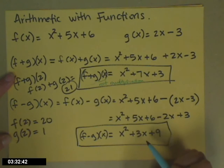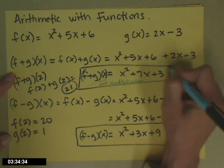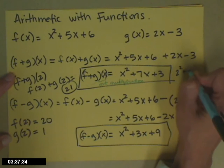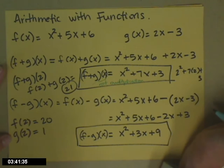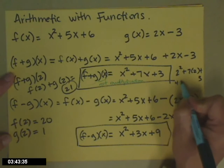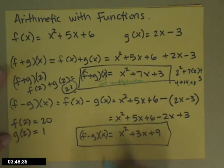That's the same answer I'm going to get if I plug a 2 in up here. 2 squared plus 7 times 2 plus 3. That should be 21. 4 plus 14 plus 3, 7 plus 14 is in fact 21.